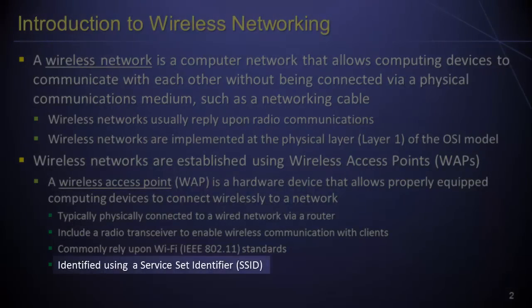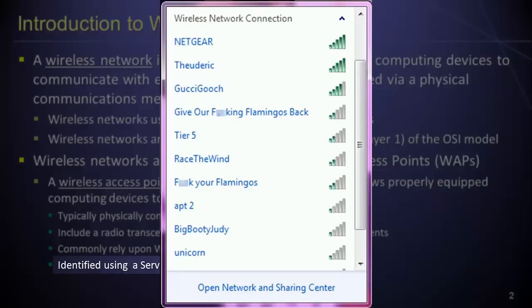Each wireless access point is identified using something known as a Service Set Identifier, or SSID. An SSID is a textual string between 1 and 32 characters in length that is intended to provide a human-readable way of uniquely identifying a wireless network, so that a human user can easily identify the wireless network to which she wishes to connect. Wireless networks have become commoner and commoner in the past several years, giving rise to an interesting social phenomenon wherein neighbors anonymously communicate with each other using the SSIDs of their wireless networks. A screenshot of SSIDs available in one neighborhood clearly indicates an interesting squabble among neighbors.